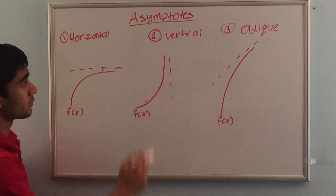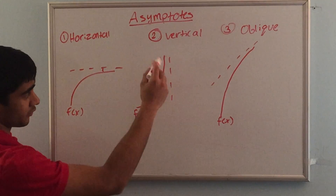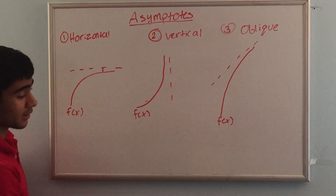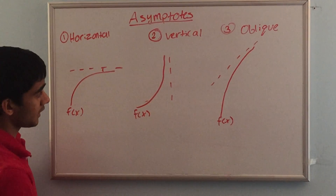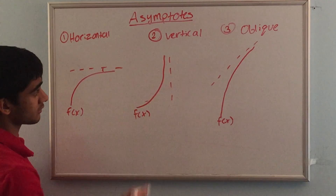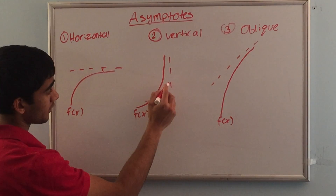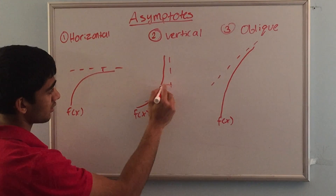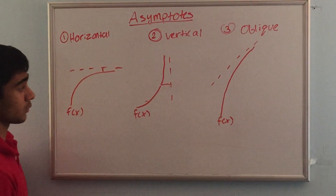The second one is the vertical asymptote — it's a vertical line and the same concept applies here. The function goes up but never actually crosses that vertical asymptote. As it goes on to infinity, the distance between the function and the asymptote will become really close to zero, but it will never actually equal zero.